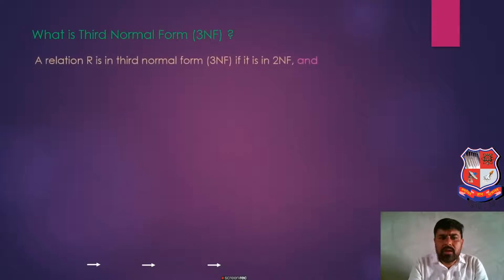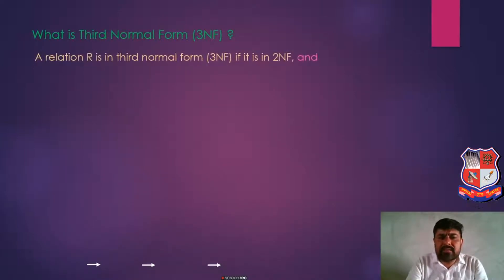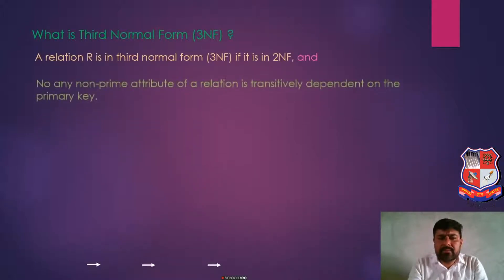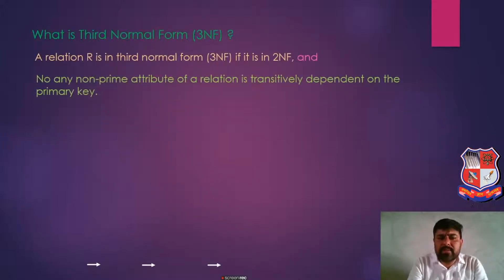A relation R is in third normal form if it is in second normal form and no any non-prime attribute of a relation is transitively dependent on the primary key.